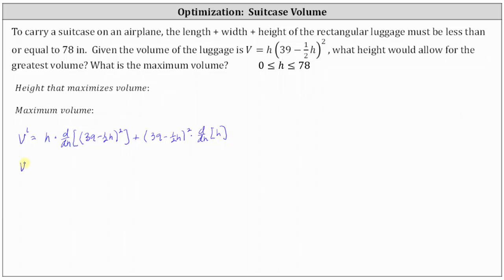This gives us v prime equals h times: to differentiate the square of (39 minus one half h) with respect to h, we apply the chain rule. The derivative is 2 times the quantity (39 minus one half h) to the power of 1 times the derivative of (39 minus one half h) with respect to h, which is negative one half. Then we add the square of (39 minus one half h) times the derivative of h with respect to h, which is 1.